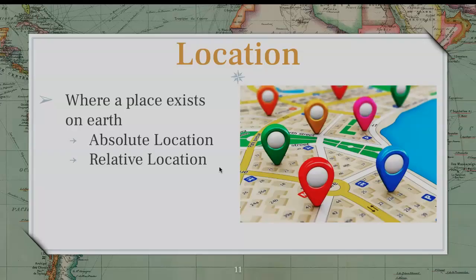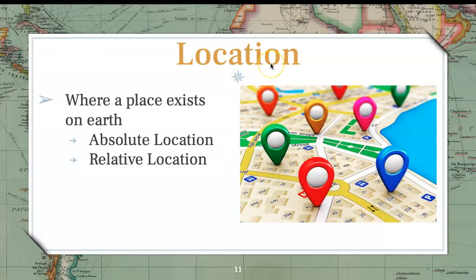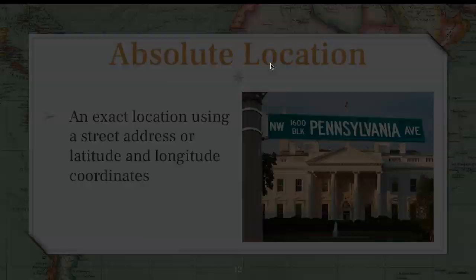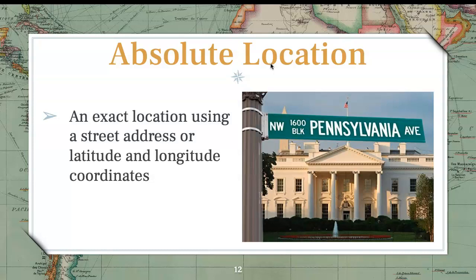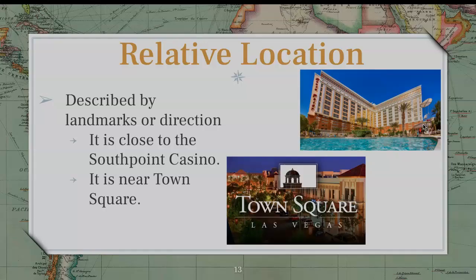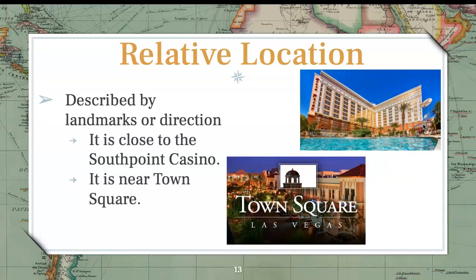Location is your next theme, and location is where a place exists on earth. There are two types of location you need to know: absolute location and relative location. An absolute location is an exact location using a street address or latitude and longitude coordinates. The example I gave is the address for the White House — 1600 Pennsylvania Avenue. Relative location is described by landmarks or direction, such as 'it is close to the Southway Casino' or 'it is near Town Square.' You're saying what it's close to, not the exact location.